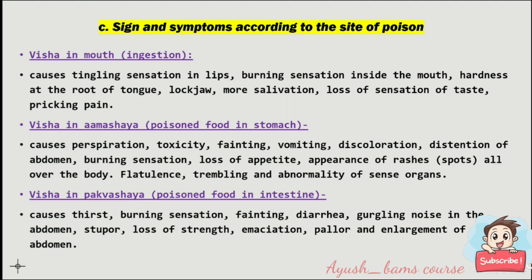Poisoned ear drops cause swelling, pain, ulcers, and defects of hearing and smelling. Smelling poisoned flowers causes headache, tears in the eyes, and loss of sensation of smell. Signs and symptoms according to site of poison: visha in the mouth causes stinging sensation in lips, burning sensation inside the mouth, hardness at the root of the tongue, lockjaw, excess salivation, loss of taste sensation, and breaking pain. Visha in amashaya causes perspiration, toxicity, fainting, vomiting, discoloration, and rashes all over the body and abnormality of sense organs. Visha in pakvashaya causes thirst, burning sensation, fainting, diarrhea, gurgling noise in the abdomen, stupor, loss of strength, and enlargement of abdomen.